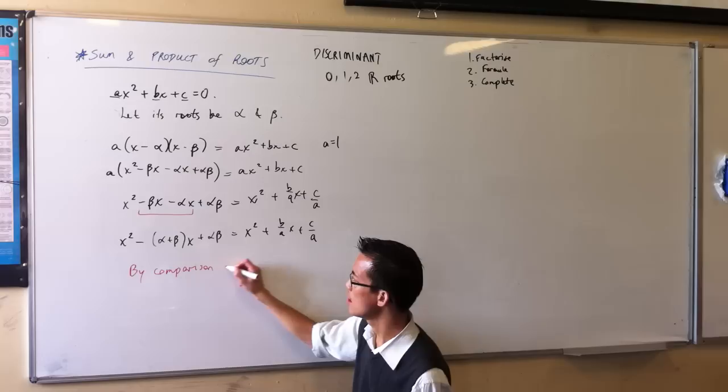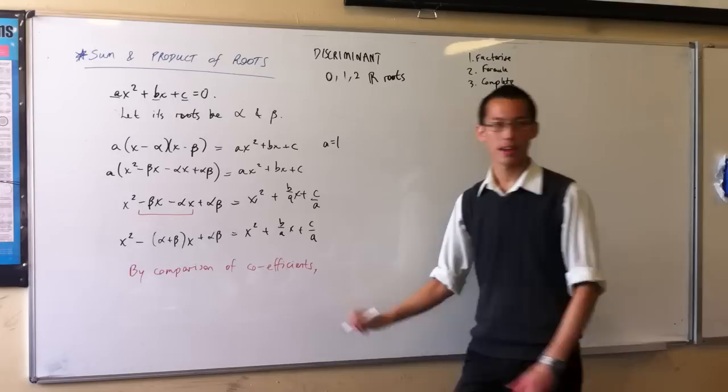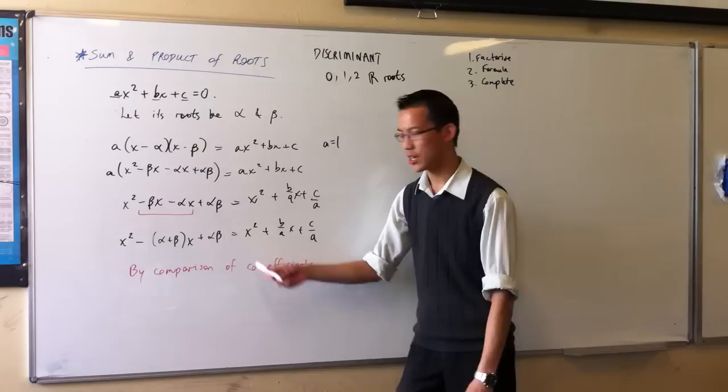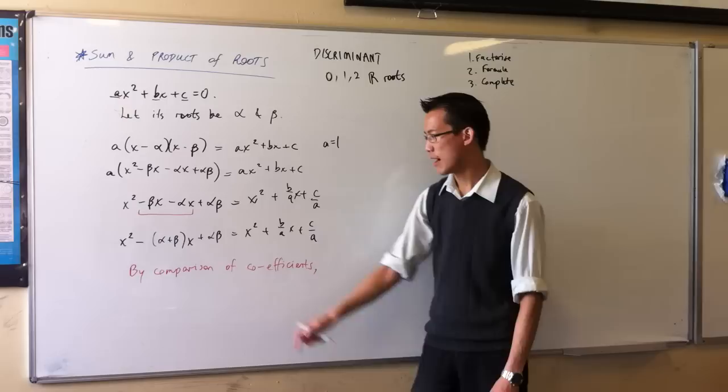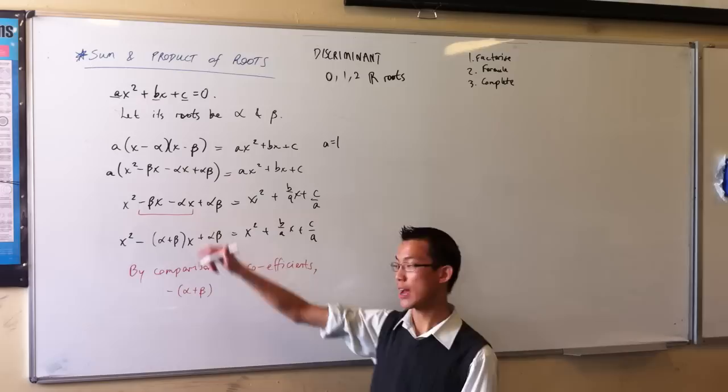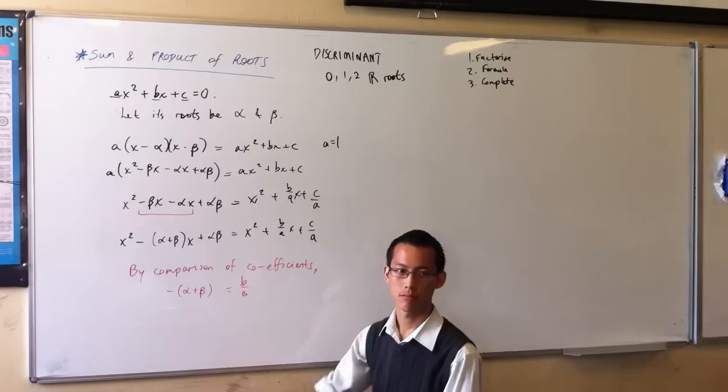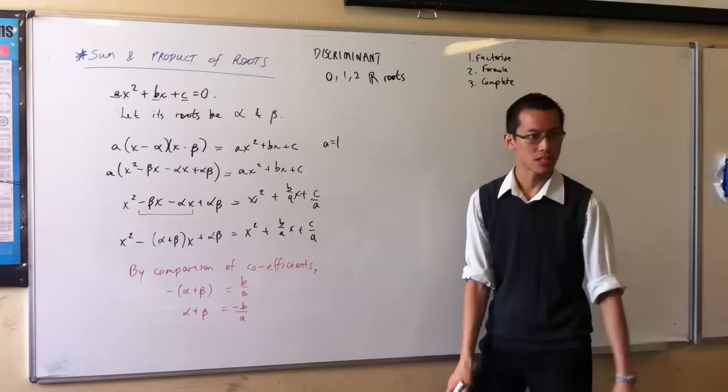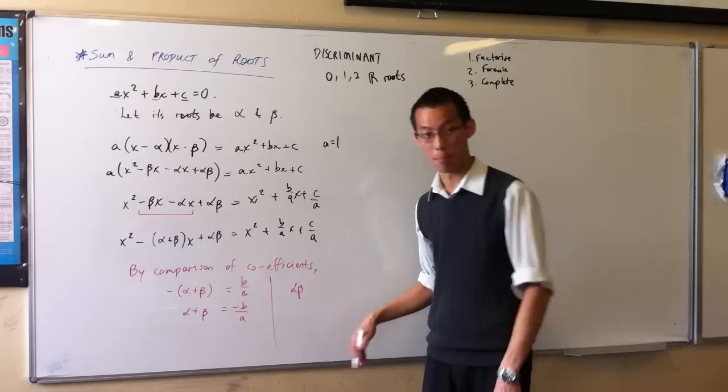You see that's what I'm doing here? I'm looking at each side and saying the coefficients should match up. I've got X squareds over here. They line up. I've got X's over here. They should line up too. So, minus alpha plus beta that's the coefficient on the left-hand side should be equal to B over A. Or, perhaps you're more familiar with looking at it without the negative sign on that side. There's the result. And, in the same way just looking at the end here. Alpha beta the product of the roots is C over A.